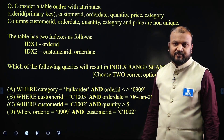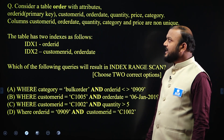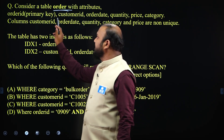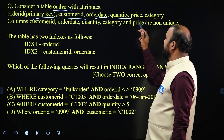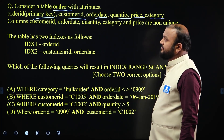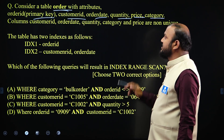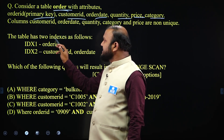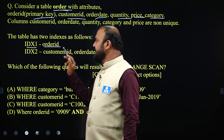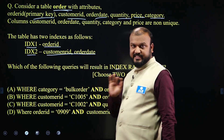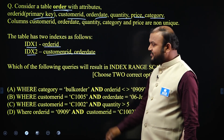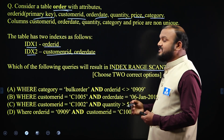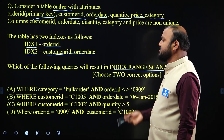The third type of questions are based on indexing. Consider a table 'order' with attributes: order ID (primary key), customer ID, order date, quantity, price, and category. Columns customer ID, order date, quantity, category, and price are not unique. The table has two indexes: index 1 is on order ID, and index 2 is on customer ID and order ID together. The question asks which of the following queries will result in an index range scan.